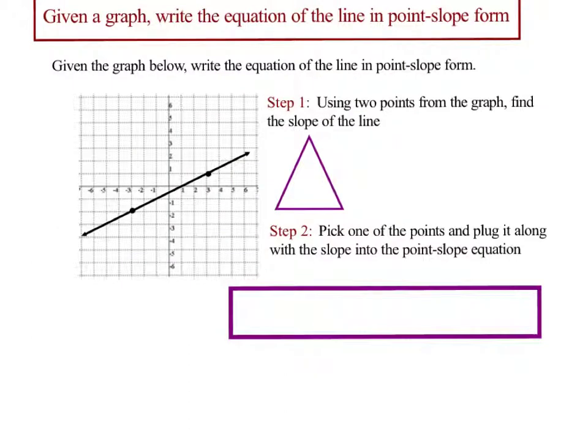One last example. Given the graph below, write the equation of the line in point-slope form. So what we're going to do is we're going to use the two points and find the slope. So you can either do slope formula or you can do 1, 2, 3, 1, 2, 3, 4, 5, 6. So the slope I got was 3 over 6, which reduces to 1 half.